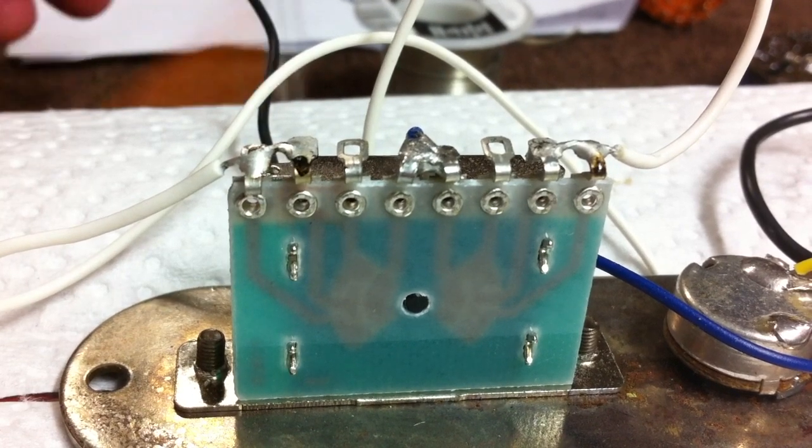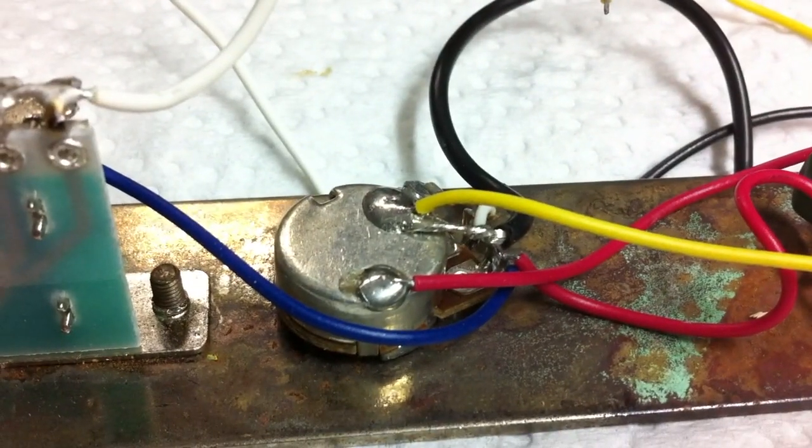So all we have to do now is hook up our black wires to the volume pot and then we can test it and see how good we did.